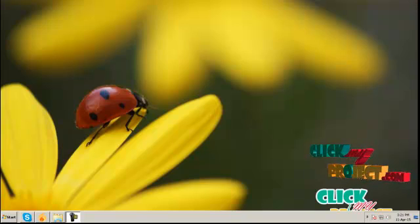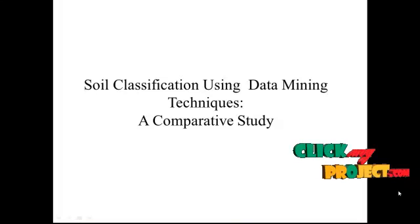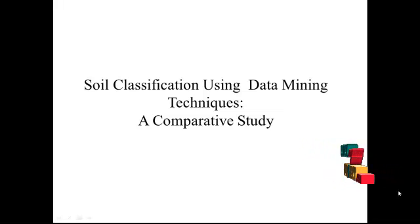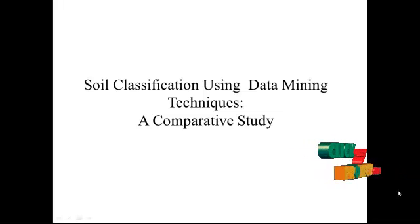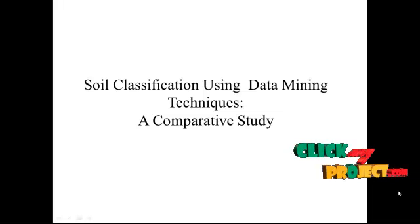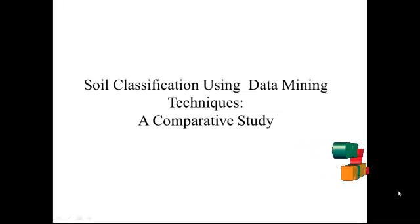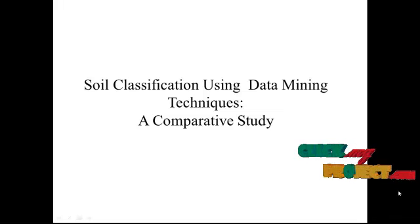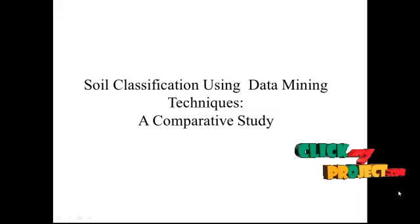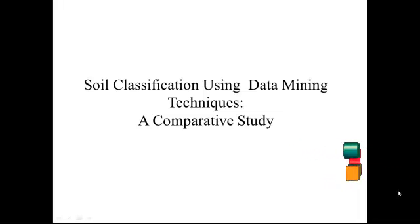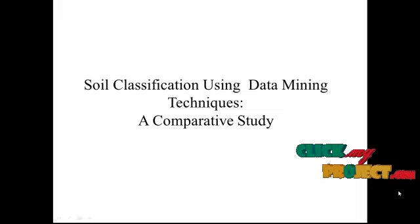Welcome to clickmyproject.com. The title of this process is 'A Comparative Study of Soil Classification Using Data Mining Techniques.' The main objective is to classify soils using a specific classifier called the FASI classification algorithm, which generates rules for defining membership functions for input attributes in the dataset. Soil classification deals with the methodological categorization of soil based on differentiating characteristics.